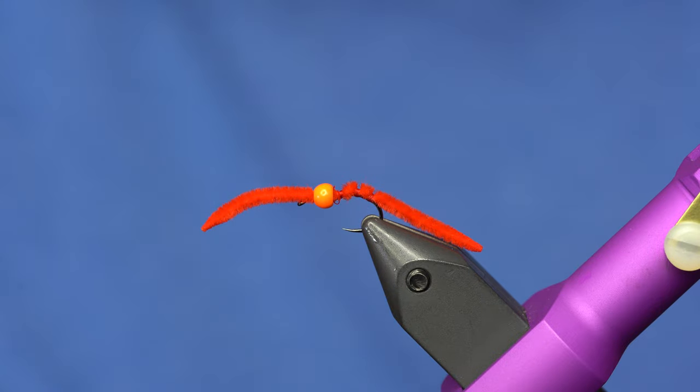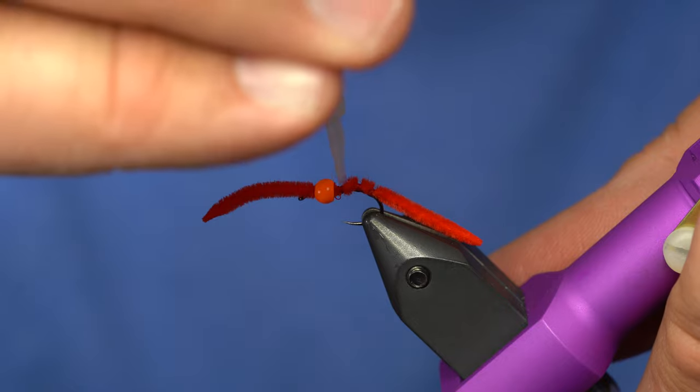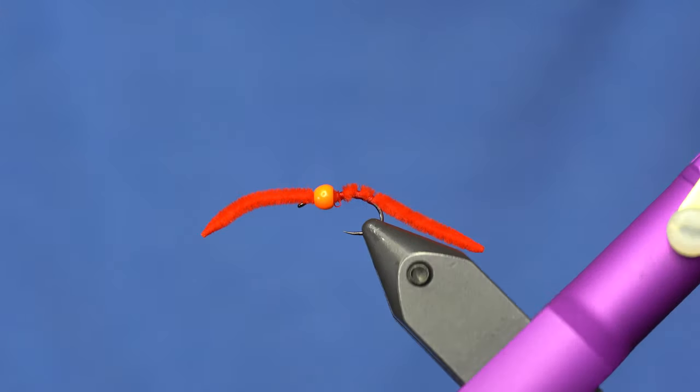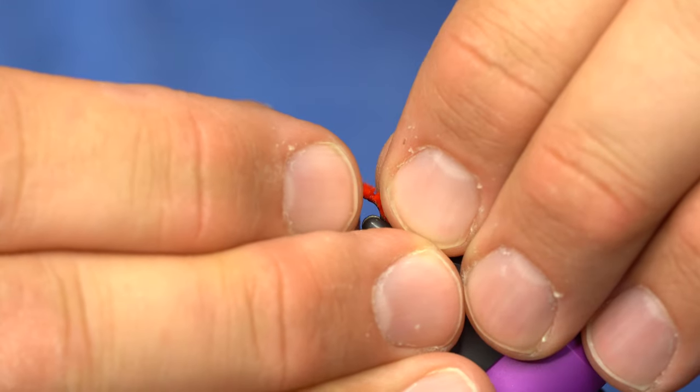Dab a little bit of super glue here. You might see my thread almost came undone. That's why you don't hand whip finish. Never as good as the tool.